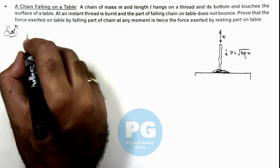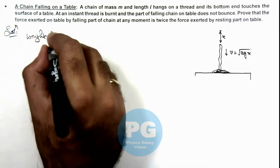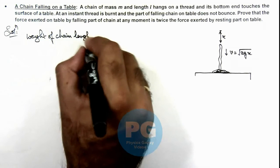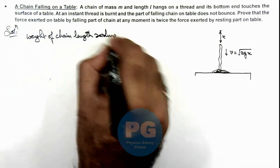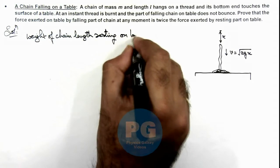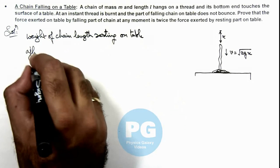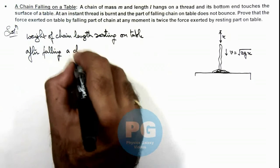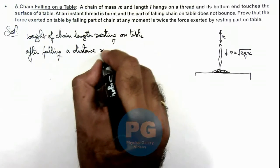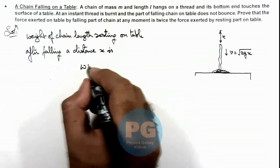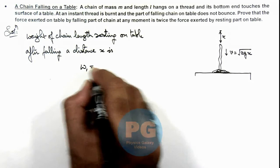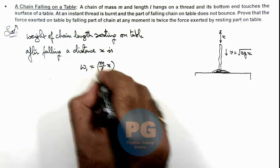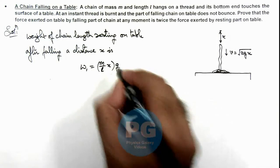And we can calculate the weight of chain length resting on table after falling distance x. This can be written as w1, which is equal to m/l multiplied by x, which is the mass of the chain resting on the table, multiplied by g.